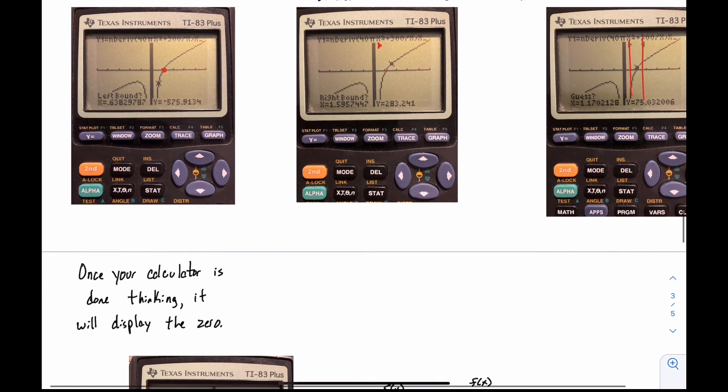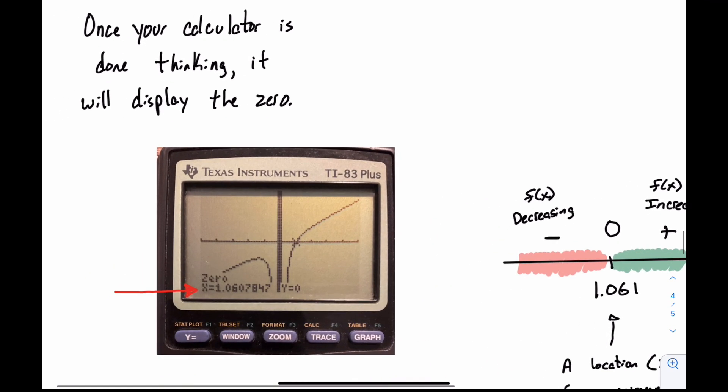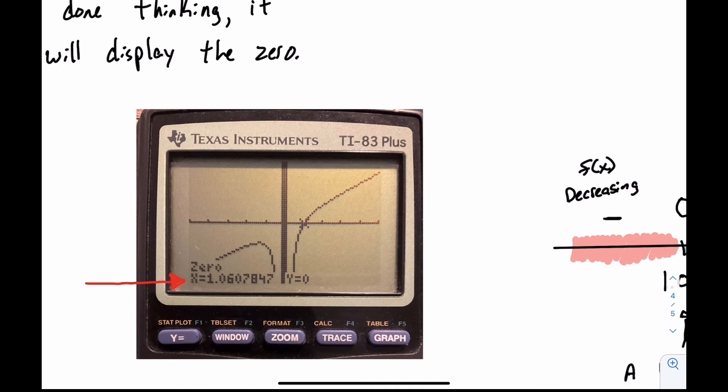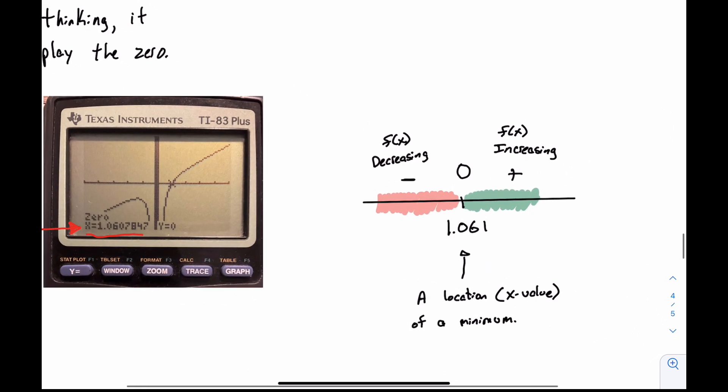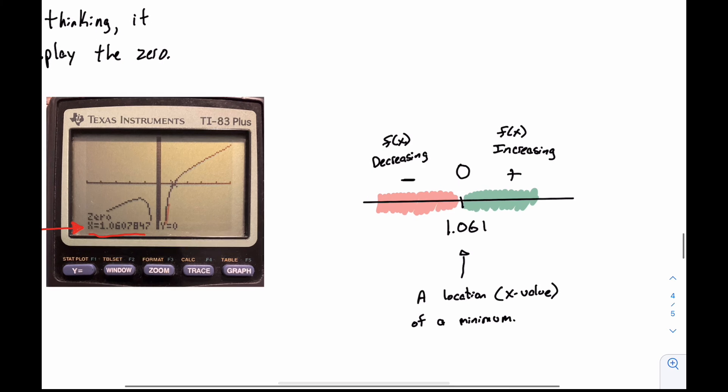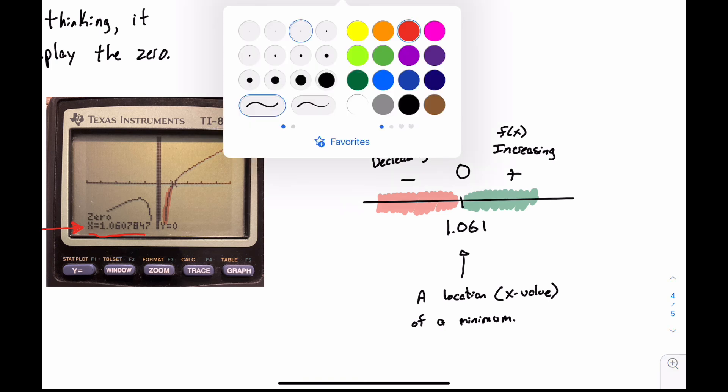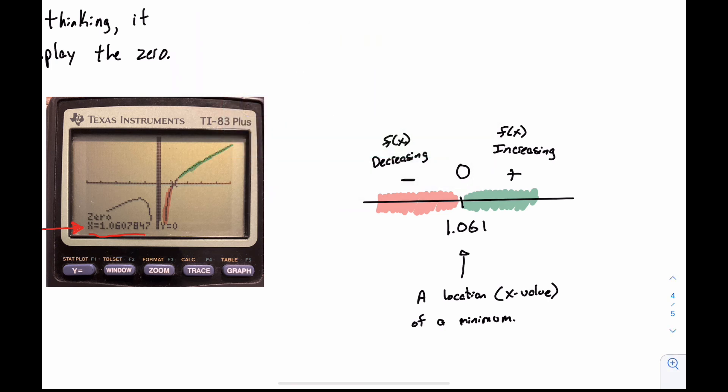And lastly, what will happen is your calculator will be thinking, thinking, thinking, and then it'll display the zero. Here it is. And you can see that y is zero there. And you can see my x value is there. So I rounded this one to three decimal places. So 1.061. And in the context of my problem, I wanted to know about a minimum value. So I was able to see that on my graph, I can see that this is below the x-axis, meaning these are negative y values, which represent negative slope on my original. And then I can see my positive y values over here, which represent positive slope on my original.